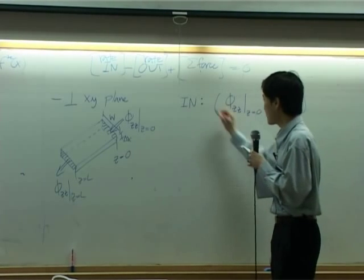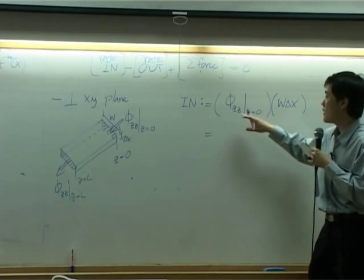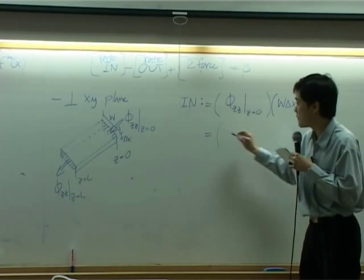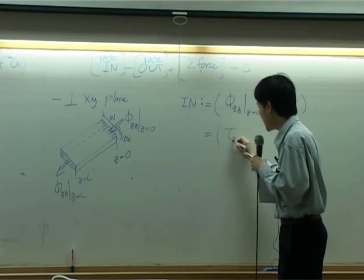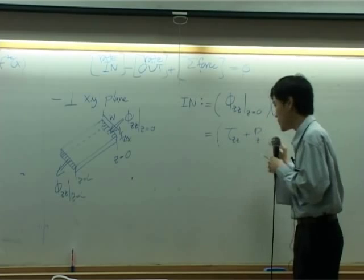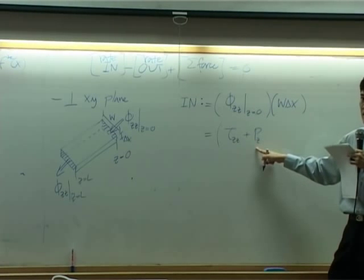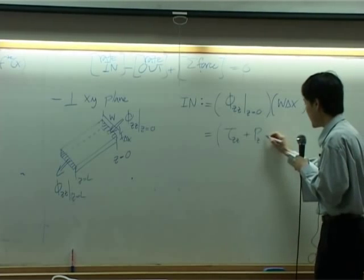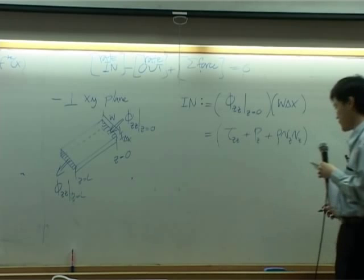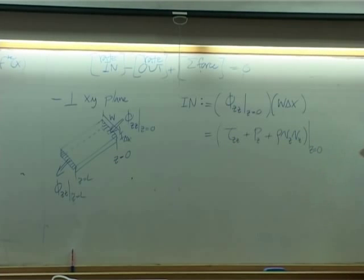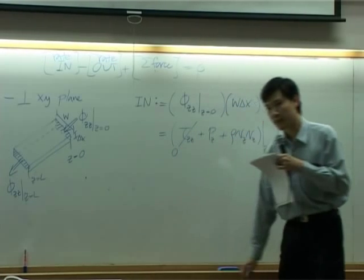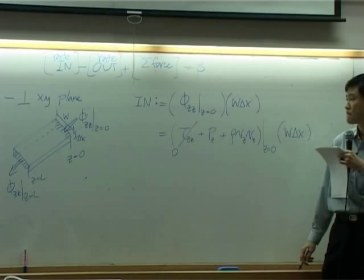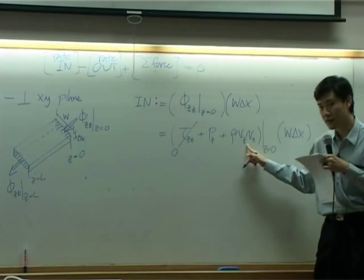Now you can see that phi_zz itself is consisting of three terms: tau_zz, pressure in z direction - these two are combined to get molecular transport - and then convective transport. Everything takes place at z equal to zero, multiplied by W times delta x. This term is already determined to be zero by using Newton's law. This term is not zero for sure. What about this term - is it zero?